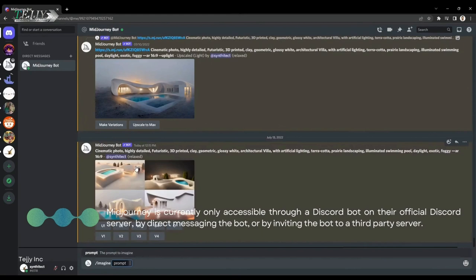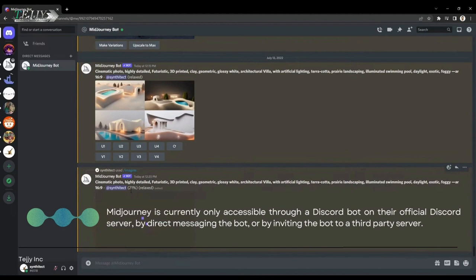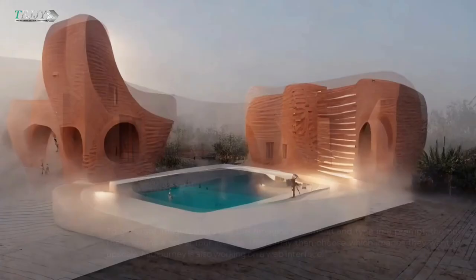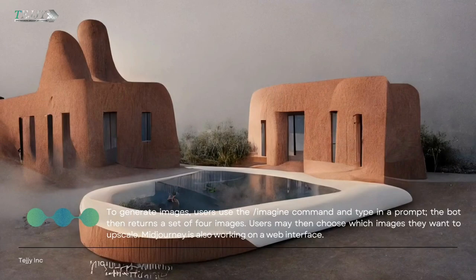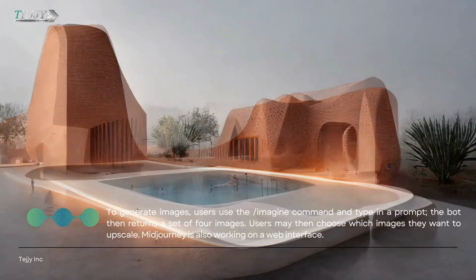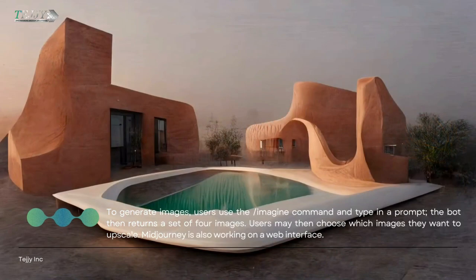Midjourney is currently only accessible through a Discord bot on their official Discord server, by direct messaging the bot, or by inviting the bot to a third-party server. To generate images, users use the Imagine command and type in a prompt. The bot then returns a set of four images. Users may then choose which images they want to upscale. Midjourney is also working on a web interface.